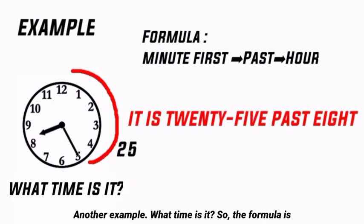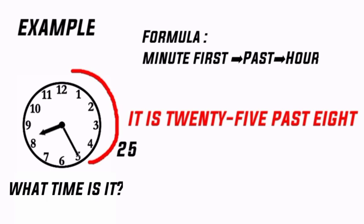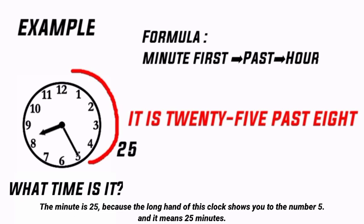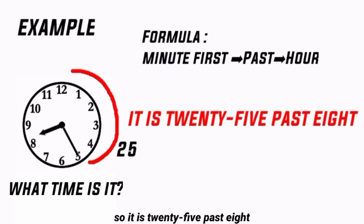Another example — what time is it? The formula is: say the minute first, then add 'past,' then the hour. The minute is 25, because the long hand shows you to number 5, which means 25 minutes. Then we add 'past,' and then the hour, which is 8. So it is 25 past 8.